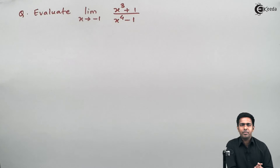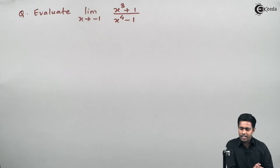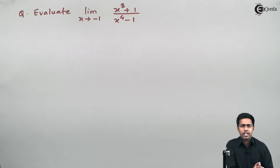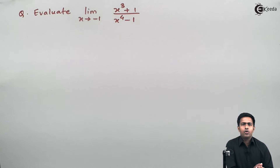Before solving this problem, if you observe the given term you will find that it is an algebraic function. Whenever we have an algebraic function we start with the direct method. If the direct method gives us an answer that is fine, but if it fails — meaning we get 0 upon 0, which is an indeterminate form — then we look for other methods. Let us start with the direct method.